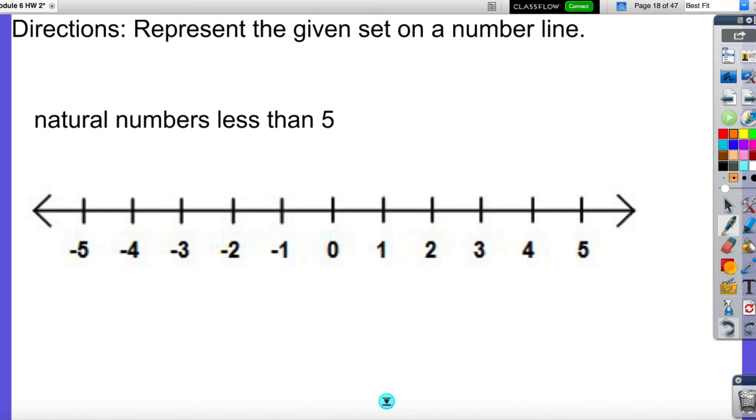Now it says represent the given set on a number line. So natural numbers less than 5. Natural numbers are the counting numbers. It starts at 1. And I'm just going to put a dot on these numbers here. These are all the natural numbers that are less than 5.